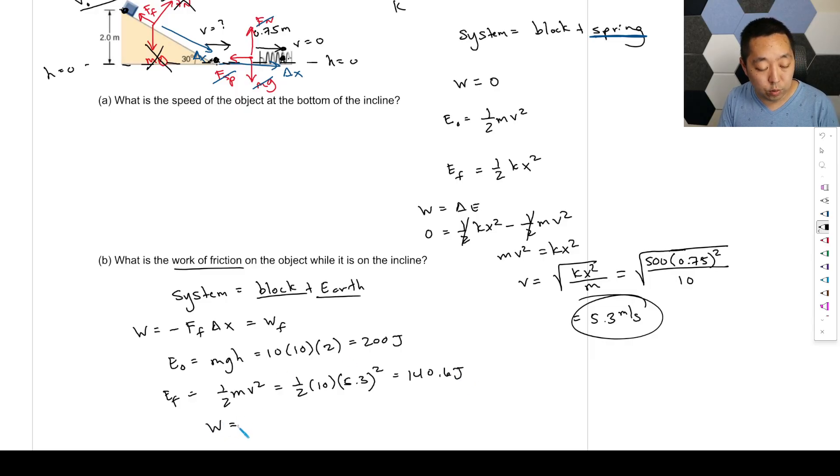And so then the work, which is the work done by friction, is the final energy minus the initial energy. So it's 140.6 minus 200. And I get about, we'll just round it, negative 60 or negative 55.4, negative 59.4 joules. Like that.